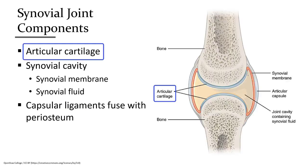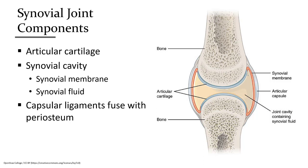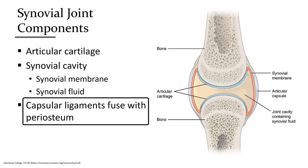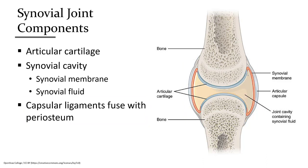Hyaline cartilage covers the ends of bones facing inside a synovial joint. The space between two bones is the synovial cavity, surrounded by a membrane that secretes synovial fluid which acts as an oily lubricant within the space. Outside this cavity is reinforced with strong ligaments that form connections from the periosteum of each bone to hold the joint together.